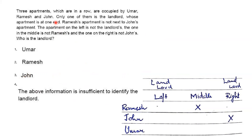This is another reasoning question. It will be easier to solve using pen and paper by plotting a diagram. Three apartments are in a row — left, middle, and right — occupied by Umar, Ramesh, and John. Only one of them is the landlord.